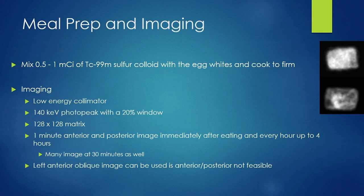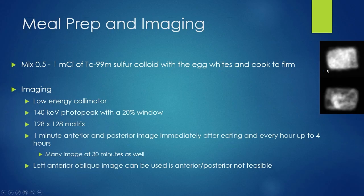To prepare the eggs, mix approximately one millicurie of technetium-99M sulfur colloid with the raw egg whites, stir it well, and then cook. It's important to mix the sulfur colloid with the raw eggs before cooking because heat breaks the disulfide bonds and helps the Tc-99M bind well to the proteins. If it's just squirted on already-cooked eggs, you may not get a good tag, resulting in partial liquid and solid emptying phases. A well-mixed egg meal shows homogeneous distribution; a poorly mixed one has large areas that are not tagged well, which would corrupt the data.